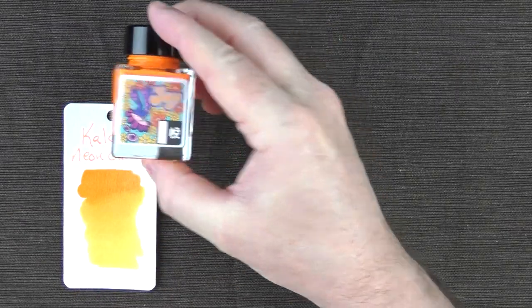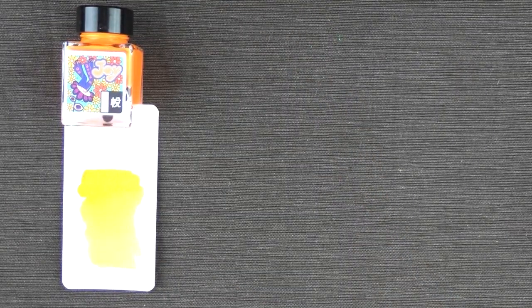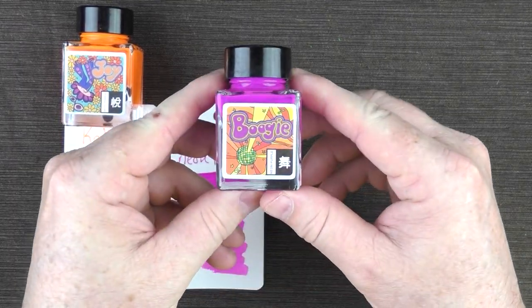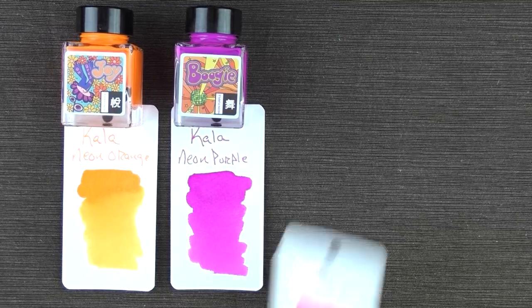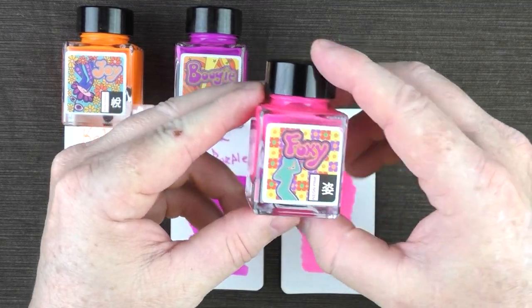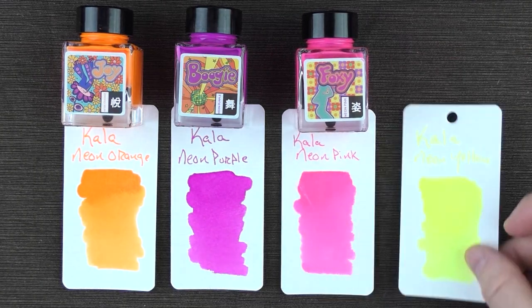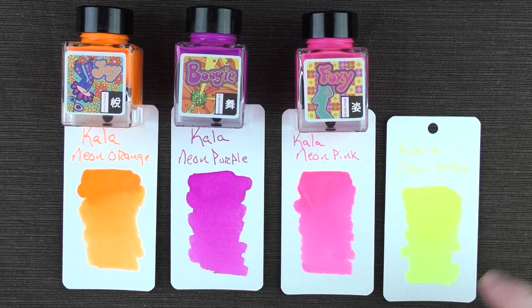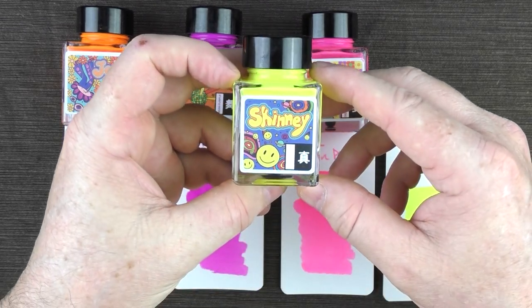Then to complete the set, we have the neon orange, which is called Joy. Then we have the purple, which is called Boogie. We have the pink, which is called Foxy. And finally we have the yellow, which is essentially like a highlighter ink. And that one is called Skinny.